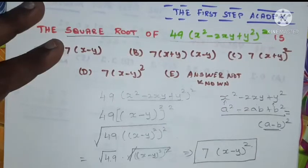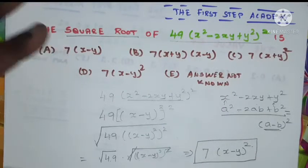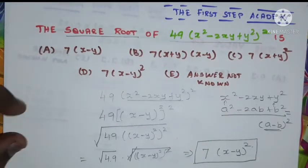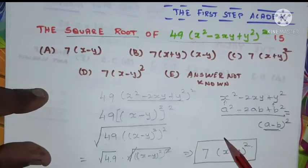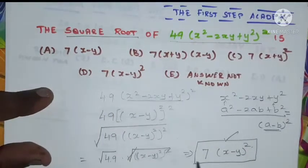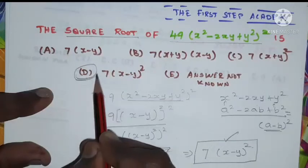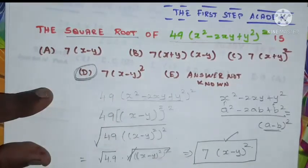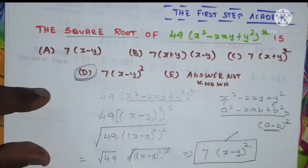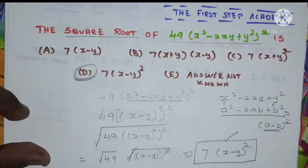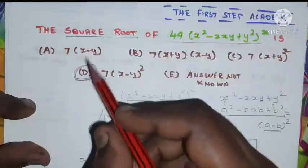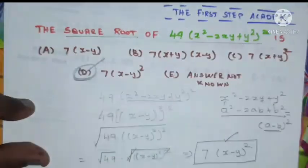So the answer we got is 7 into (x minus y) whole squared. Look at the options—which one is matching exactly? Option D, 7 into (x minus y) whole squared is matching with the answer we got. Hence, the answer for this particular question is option D.